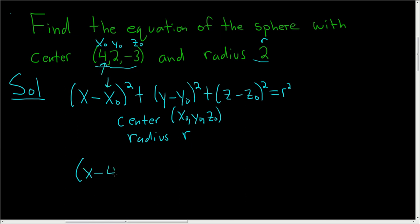Quantity squared, plus y minus 2, that's y₀, plus z, and then it's minus negative 3. So a minus and a minus, we're going to get a plus. And then r is 2. So when you square 2, you just get 4. So this is equal to r², which is 4.